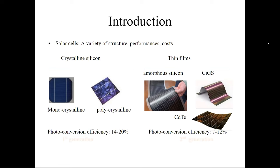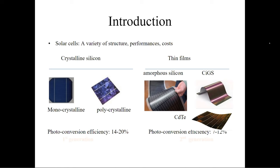There are three generations of solar cells. The first generation, shown on the left side of the slide, is called crystalline silicon. The main advantage of this type is high power conversion efficiency, approximately around 20%. The drawback is its high cost and complicated manufacturing process.